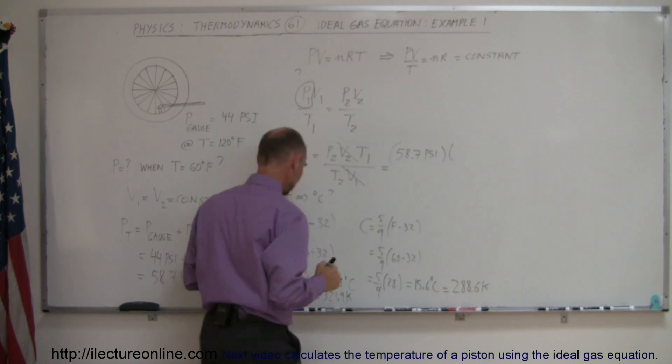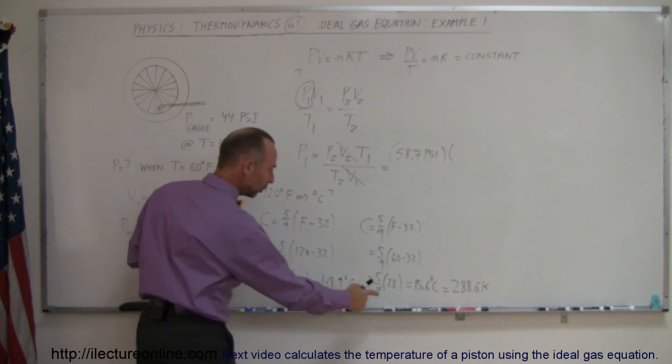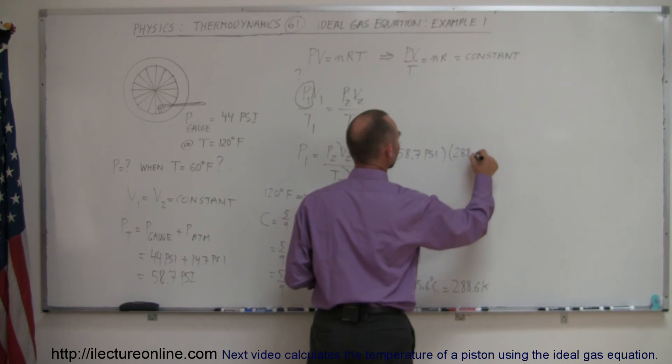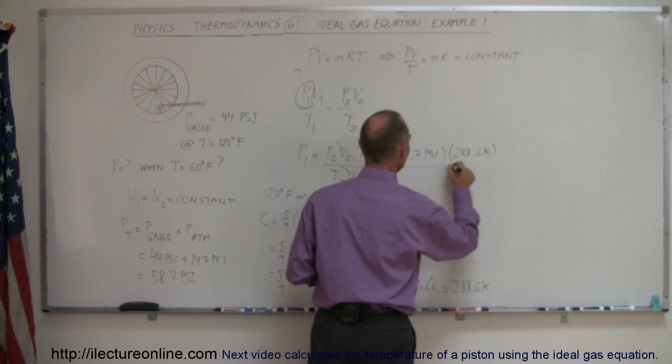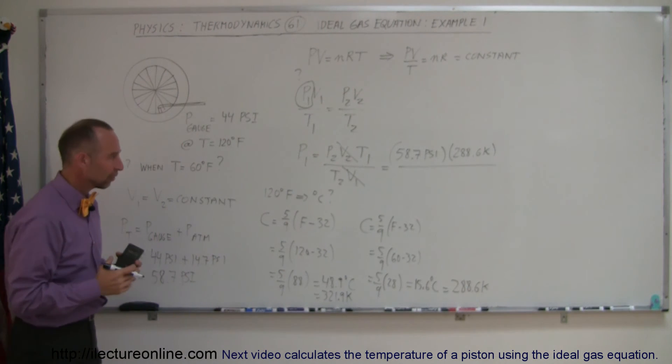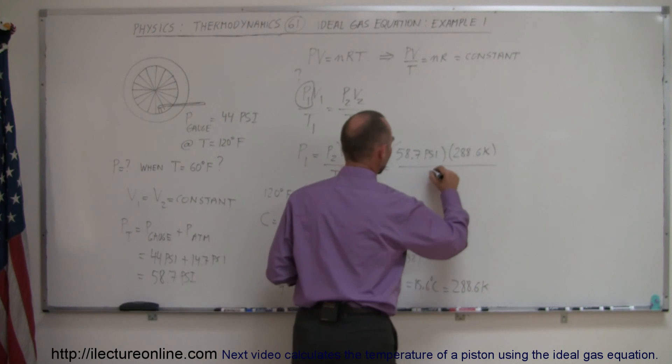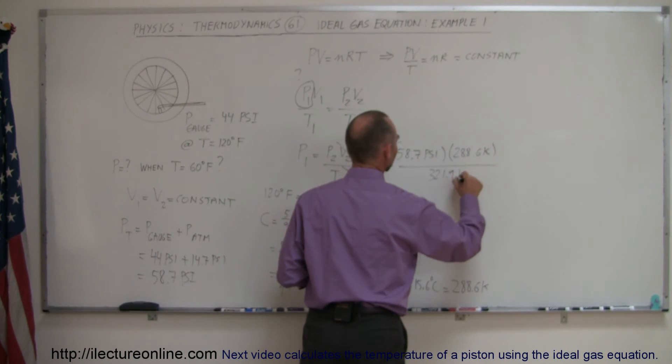We multiply times the temperature initially, T1, which is 288.6 Kelvin. And then we divide that by the final temperature, when the tire is nicely heated up in the desert, of 321.9 Kelvin.